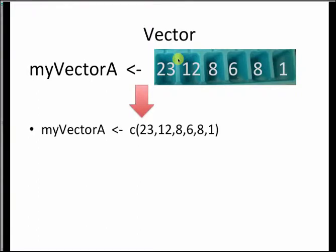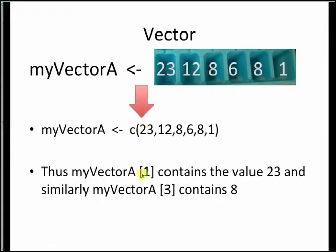To create a vector in R, you define my_vector_a and assign the value using a small 'c' followed by parentheses with the numbers inside. So my_vector_a[1] contains 23, my_vector_a[2] is index 2, and my_vector_a[3] contains the value 8.